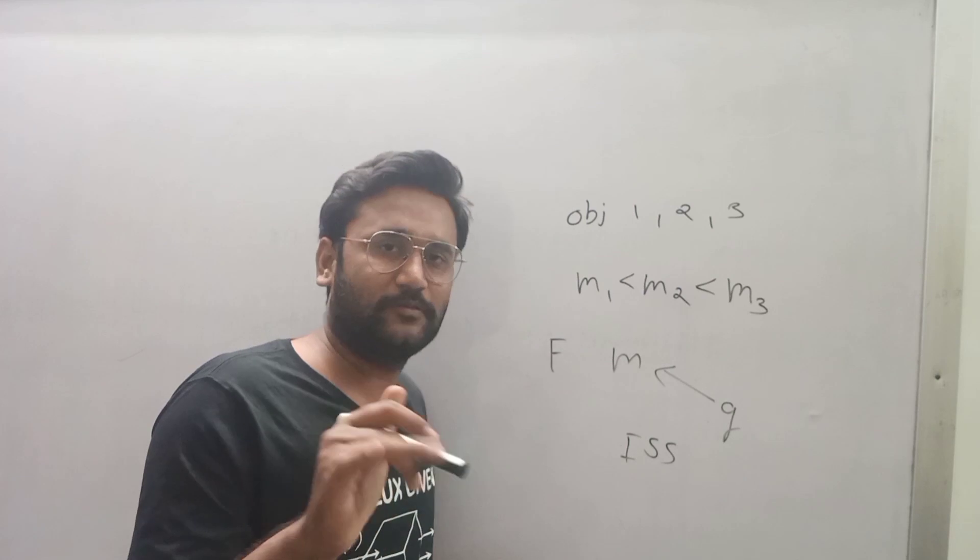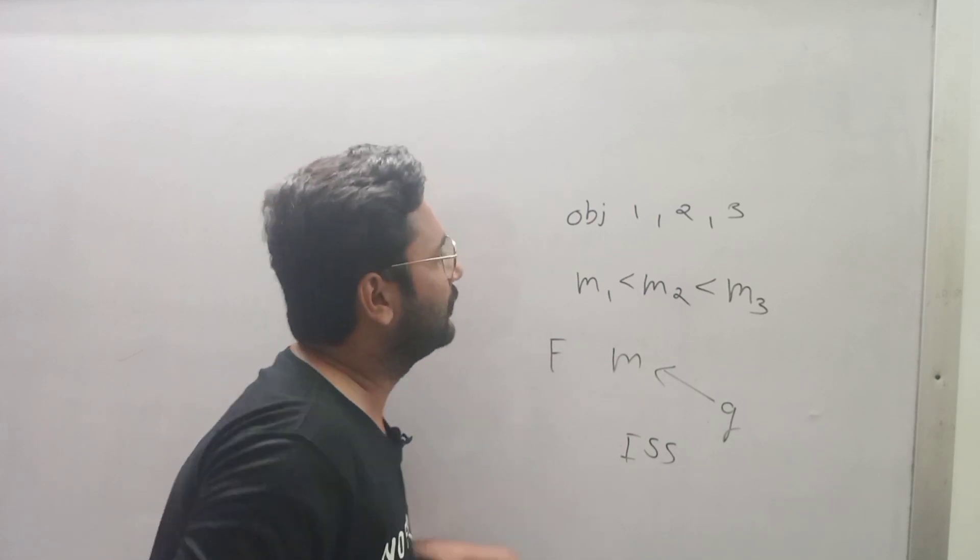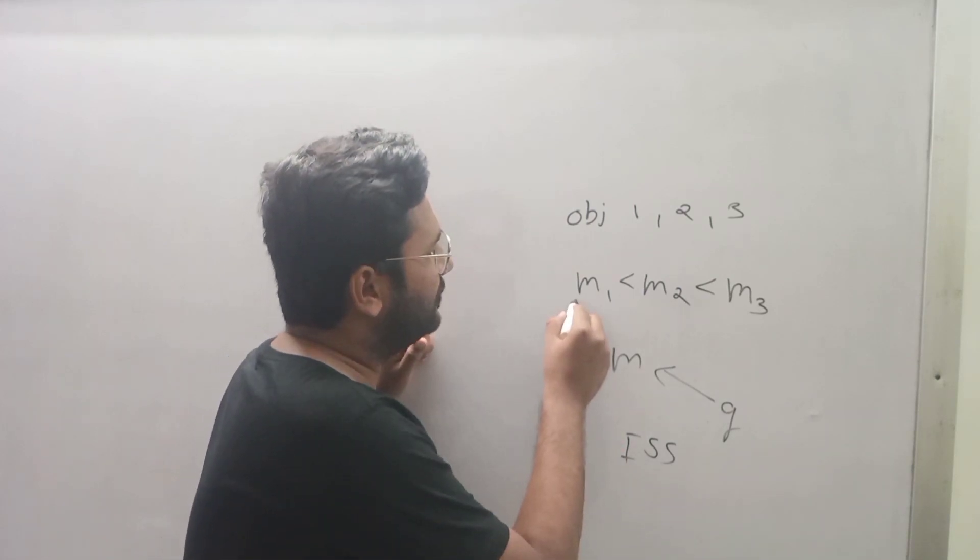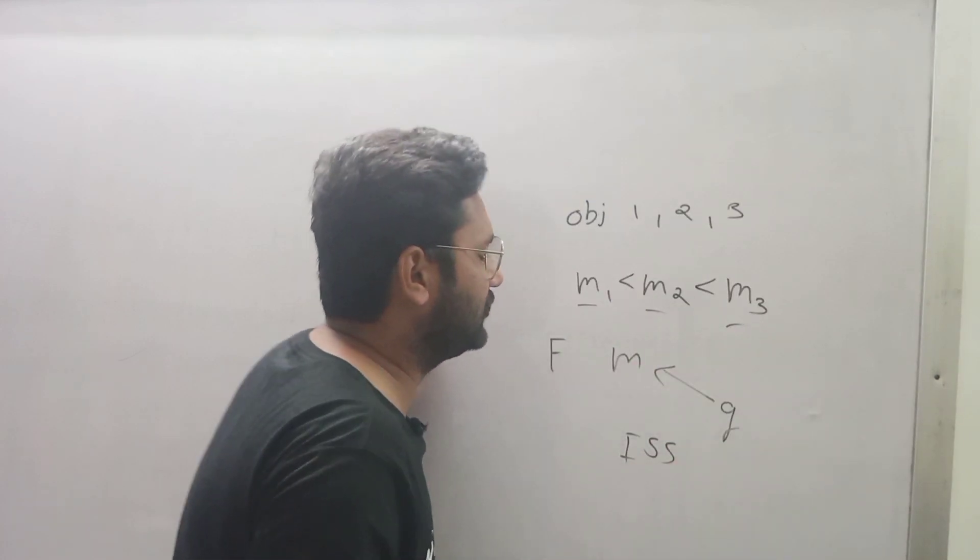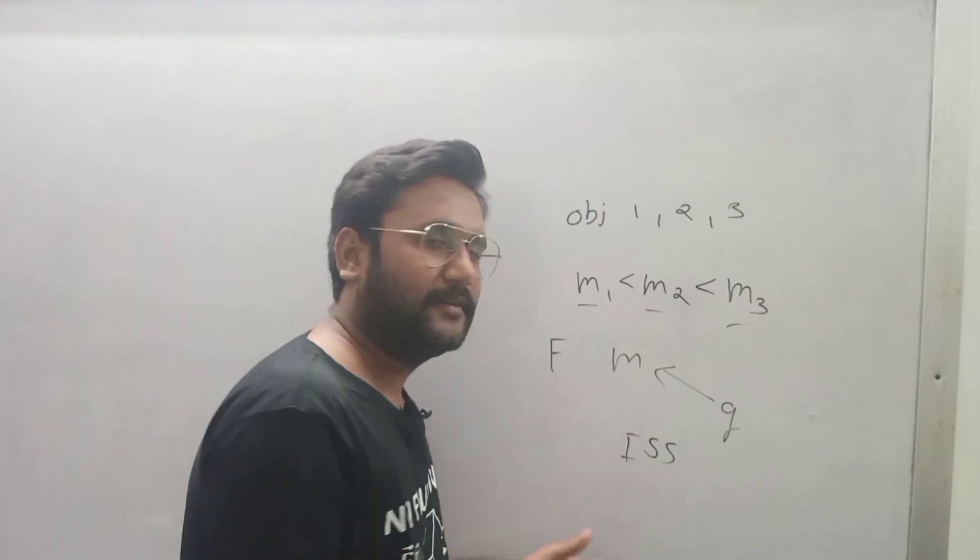In that video, mass of the object m1 is smallest, m2 is middle, and m3 is largest mass. So let's start it.